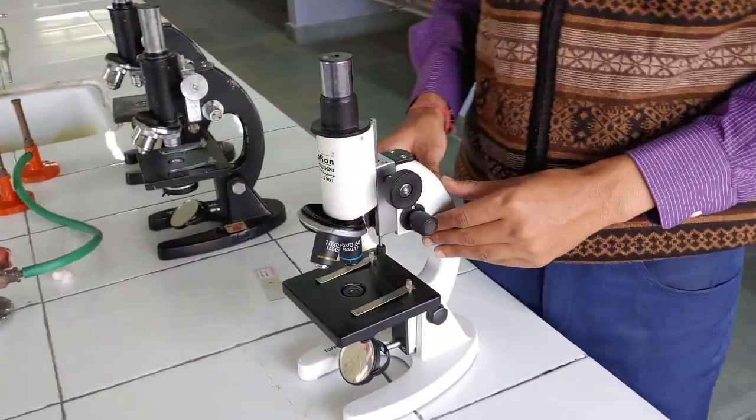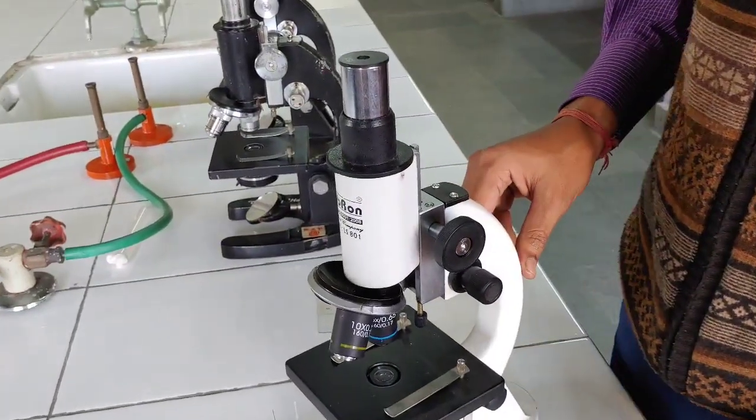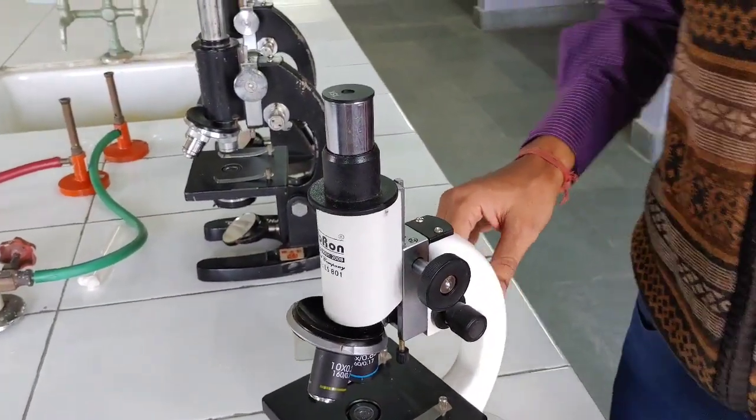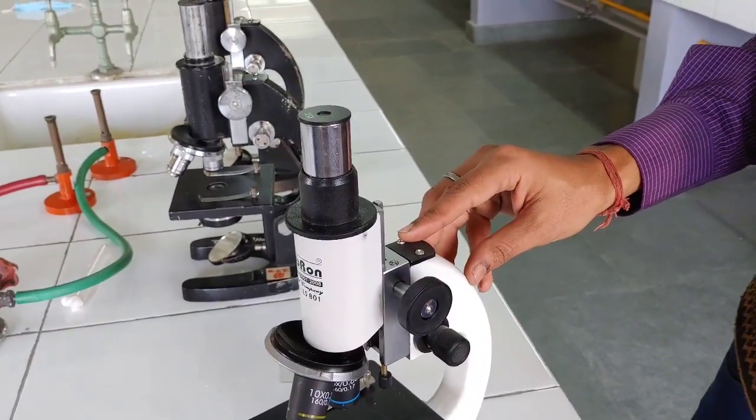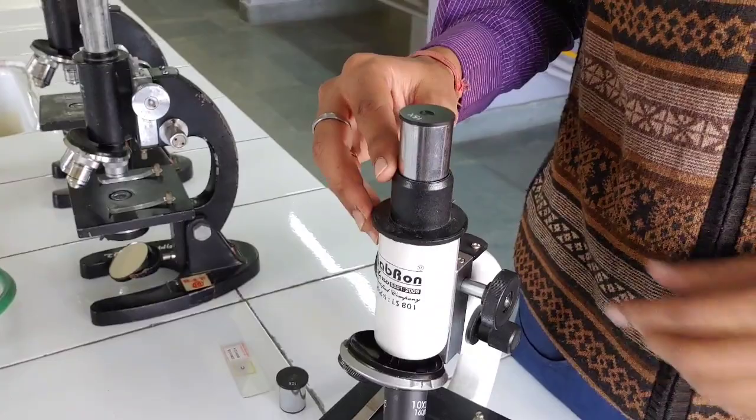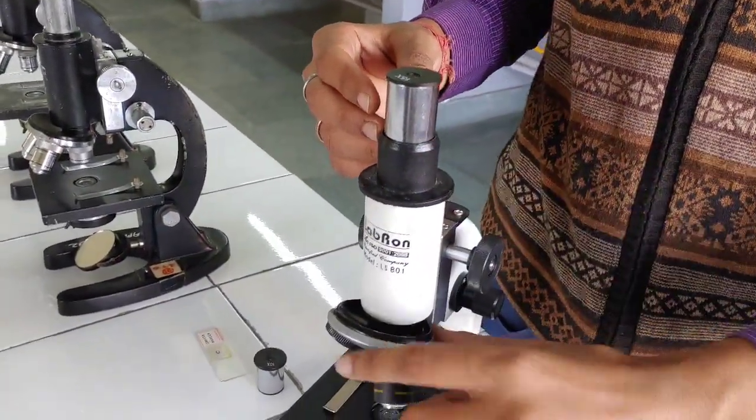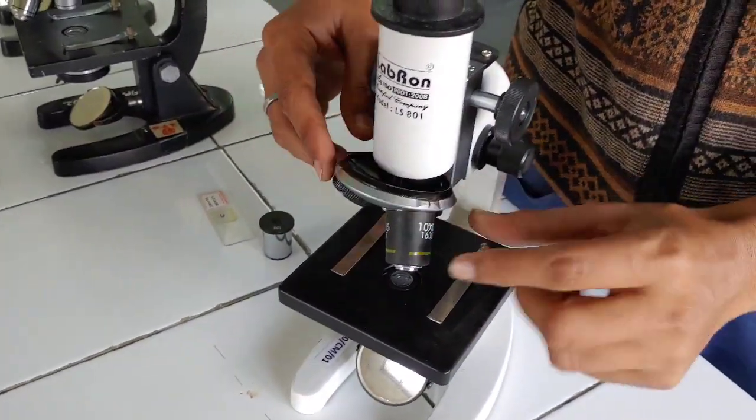Now what is compound microscope? You can see in this video that the compound microscopes consist of two sets of lenses. Remember this, that any compound microscope consists of two sets of lenses and objectives with higher magnification.